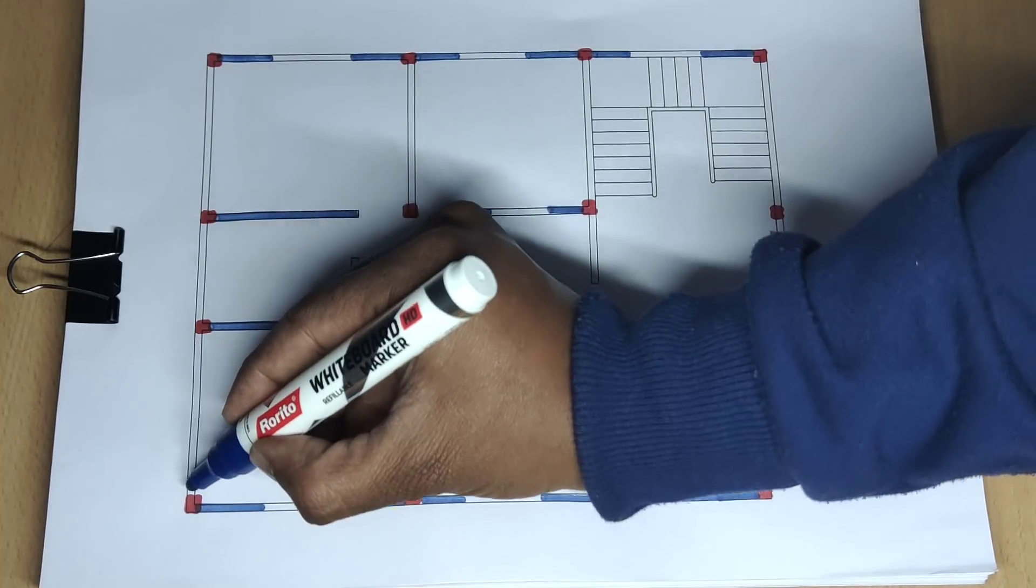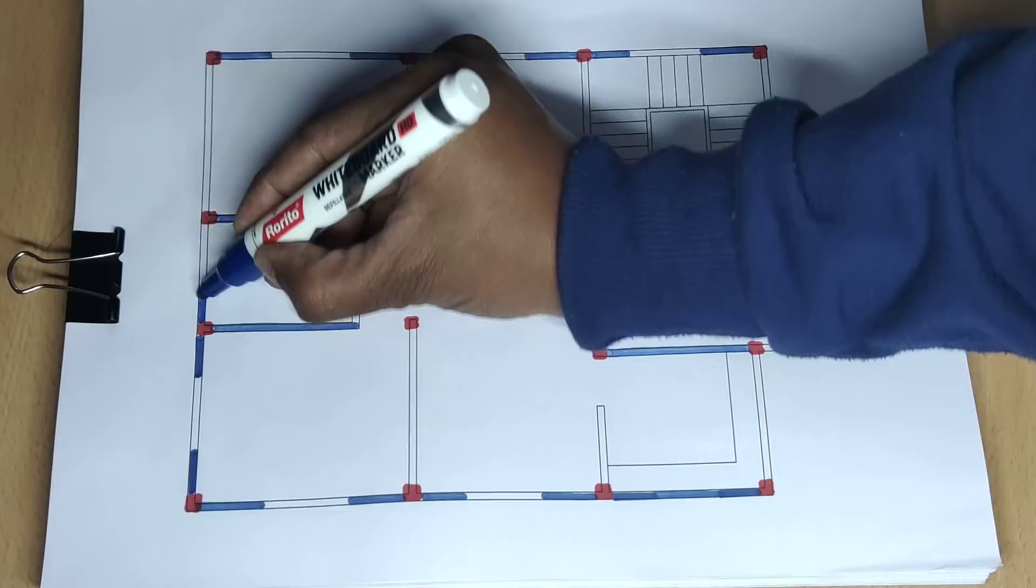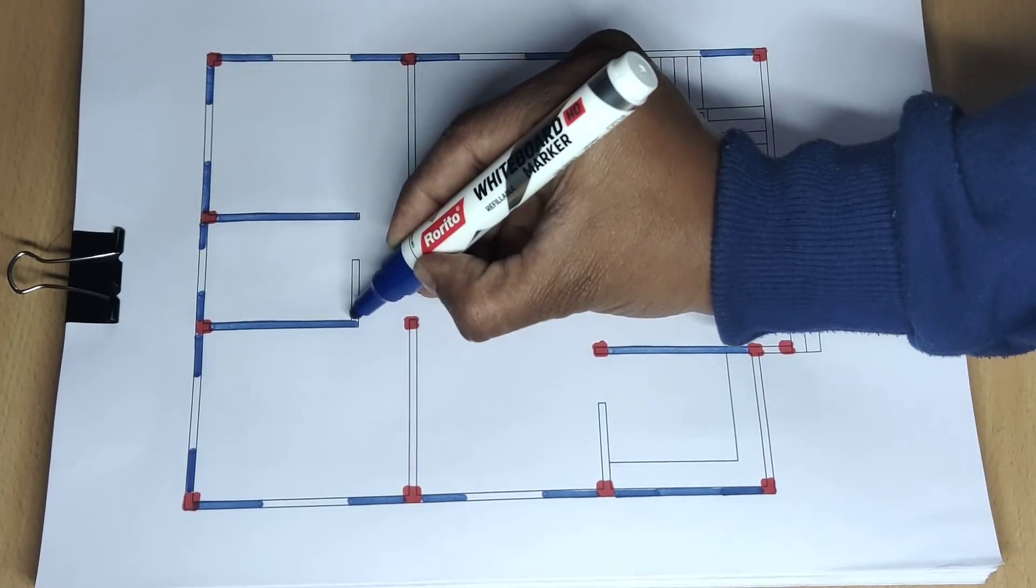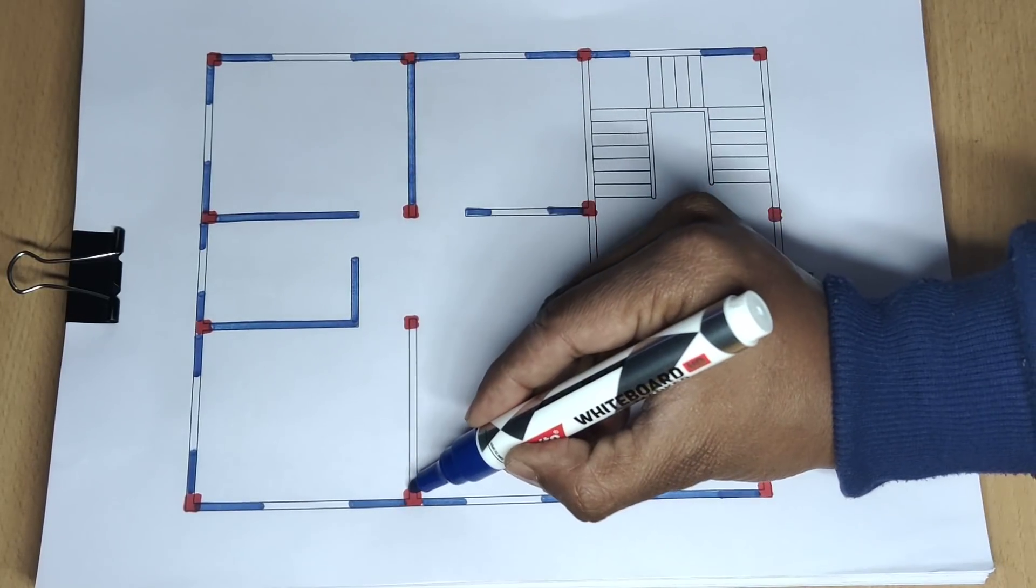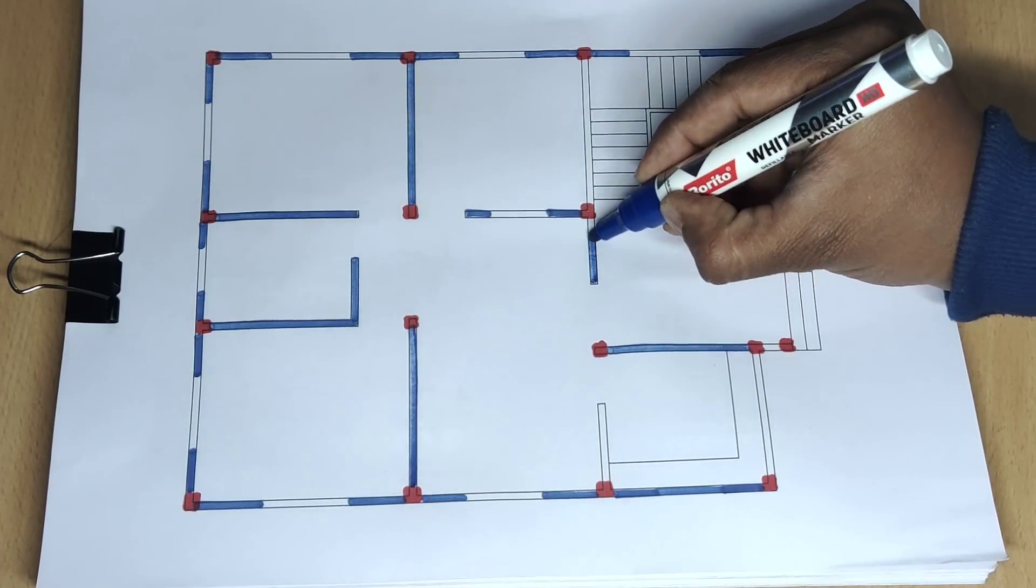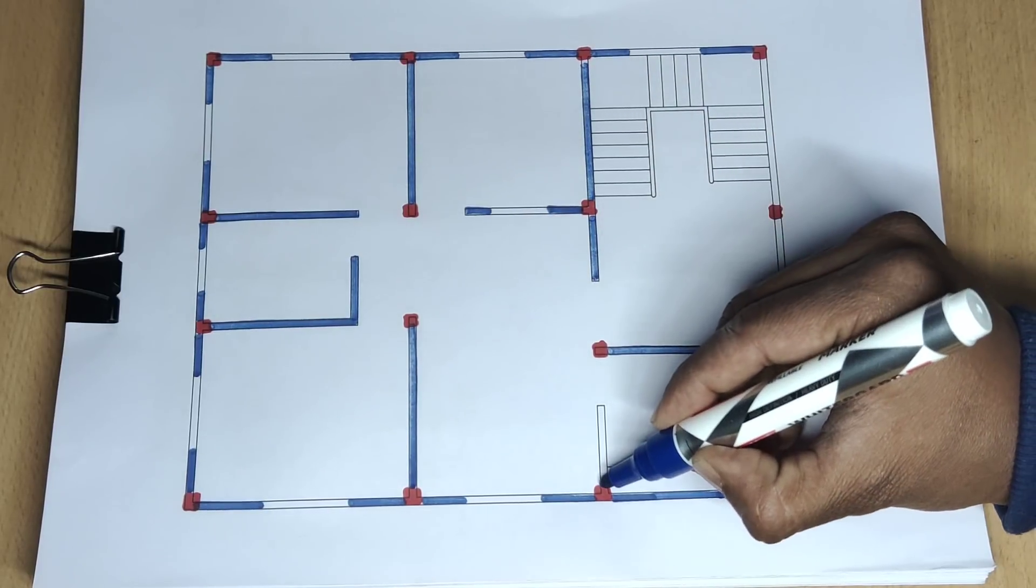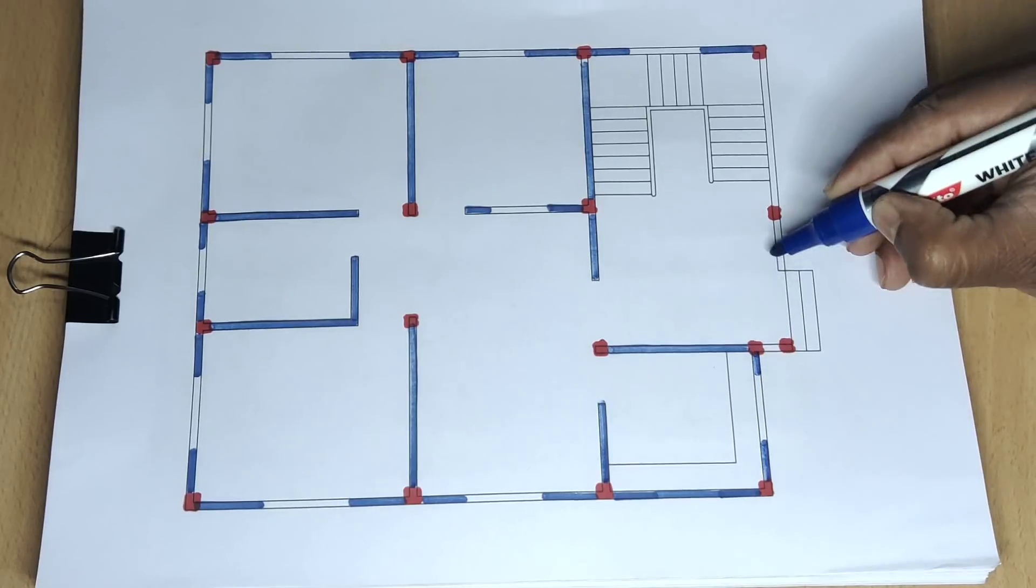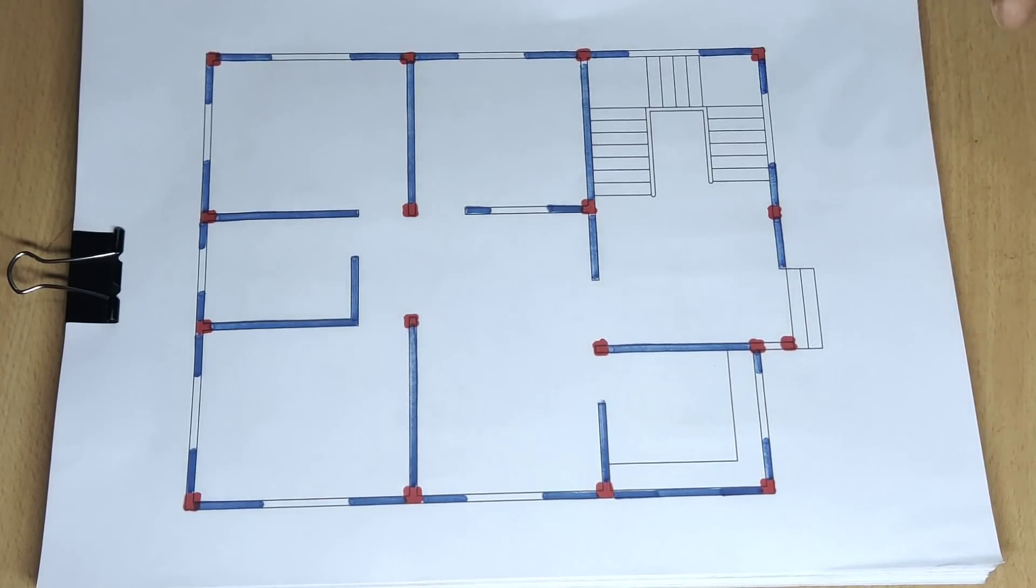This is the outside wall. The internal partition walls are also 5 inch. The outer wall here is also 5 inch wide.